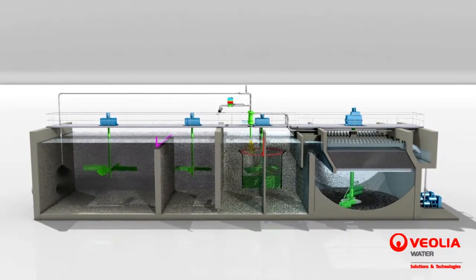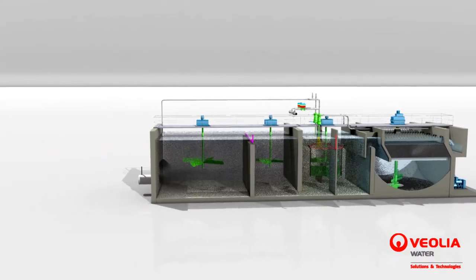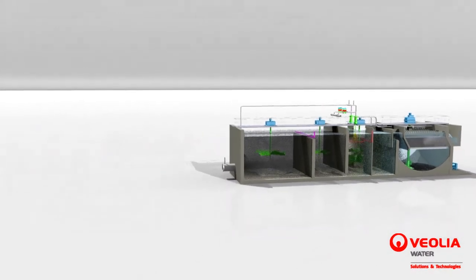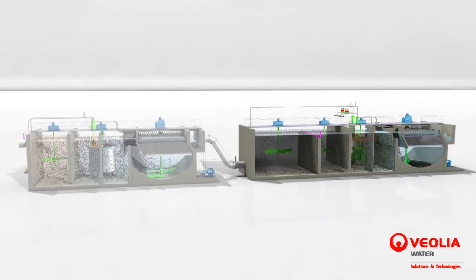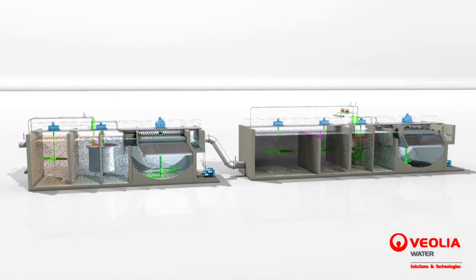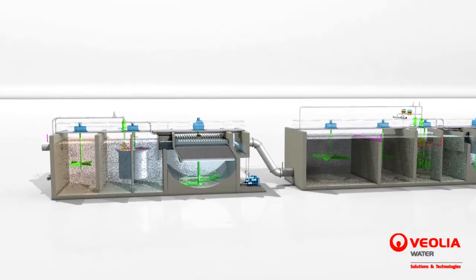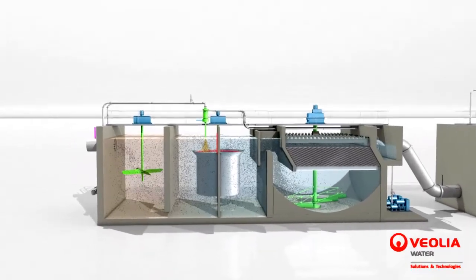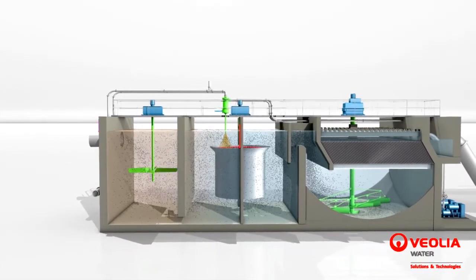Based on raw water composition and treatment objectives, the process is also available in the Actiflo twin carb configuration. This unique design consists of two Actiflo units in series, allowing optimum overall treatment performance and reduced consumption of activated carbon.